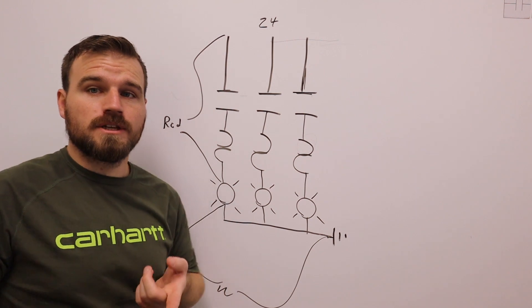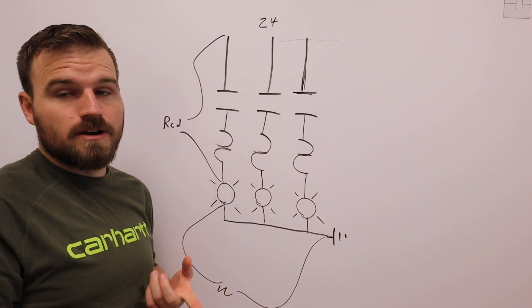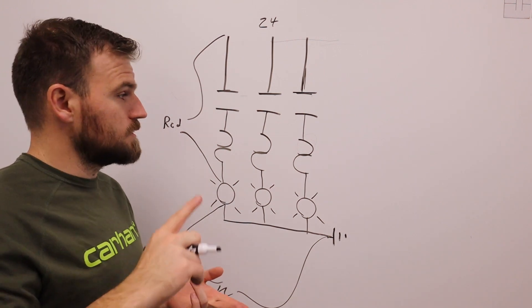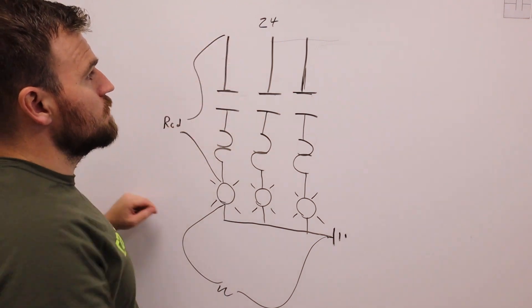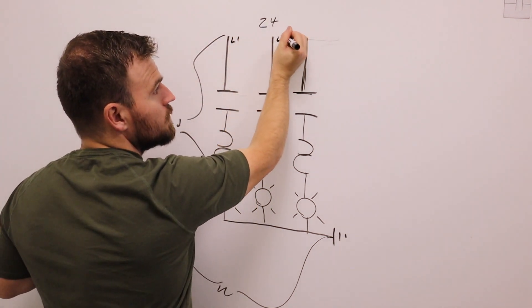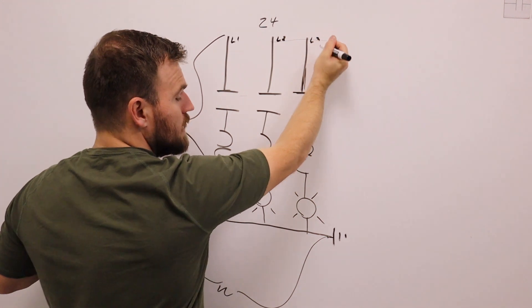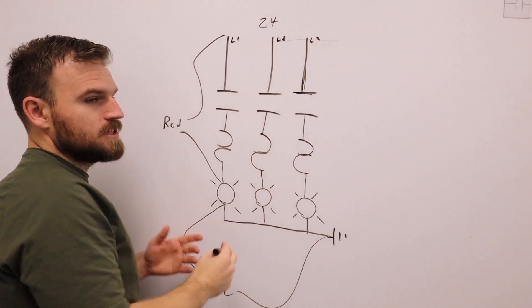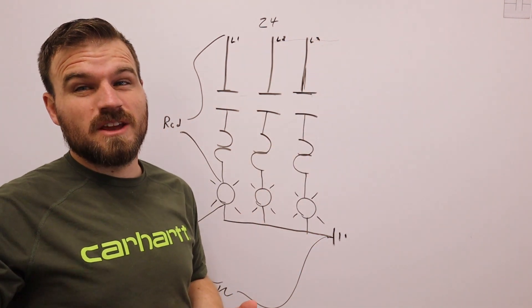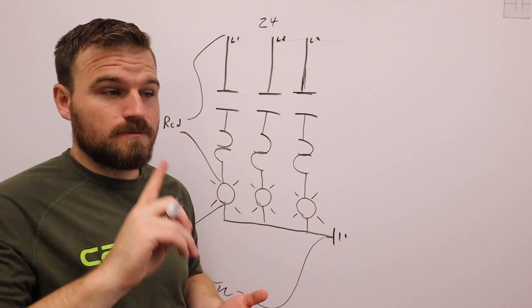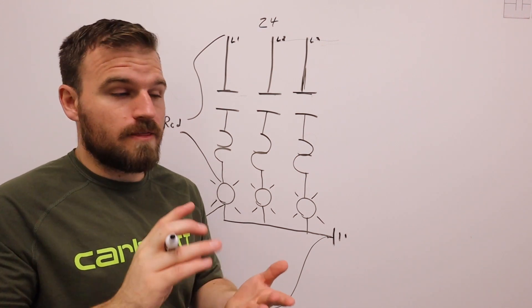We're not worried about actually getting our wire numbers for this one. But do you remember them coming in will be L1, L2, and then L3. Down here, they will change into T1, T3, or T2, and T3. That's because now they're terminals on that motor.